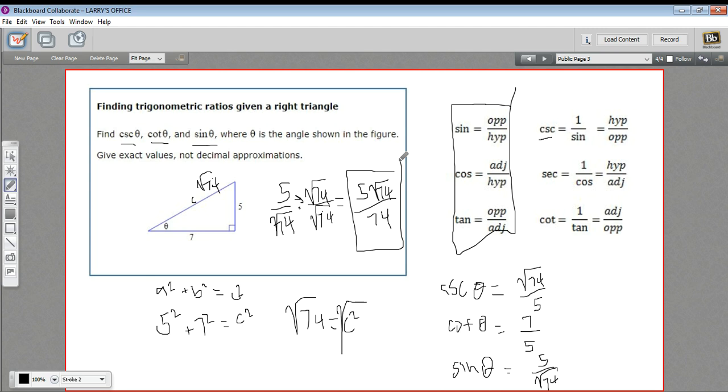So that is how to find trigonometric ratios, including cosecant, secant, and cotangent when you have a right triangle.